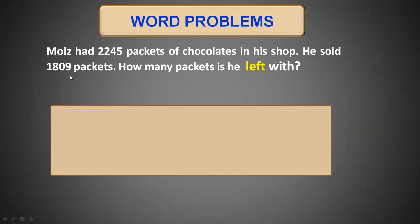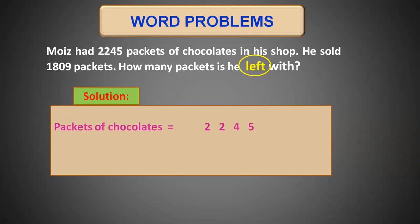He sold 1809 packets — those packets are now given away. The word 'left' shows what function we have to do, which is subtraction. In our previous lesson, I showed you some clue words which indicate whether to perform addition or subtraction, and this word 'left' was for subtraction. Coming to the solution, total packets of chocolates are 2245, packets sold are 1809, and packets left will be found by subtraction.